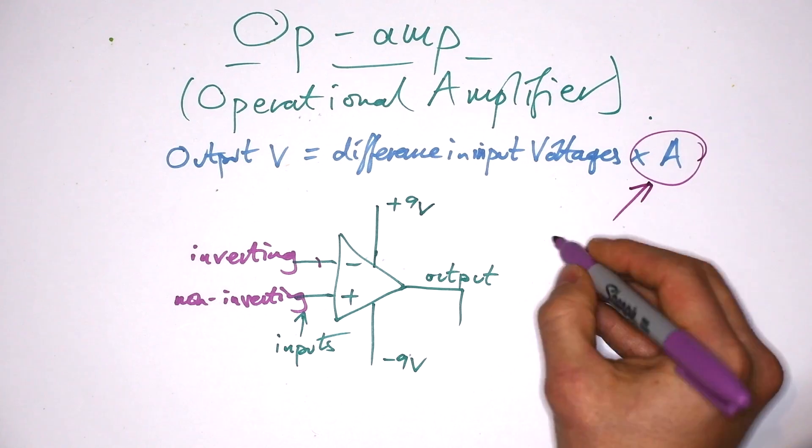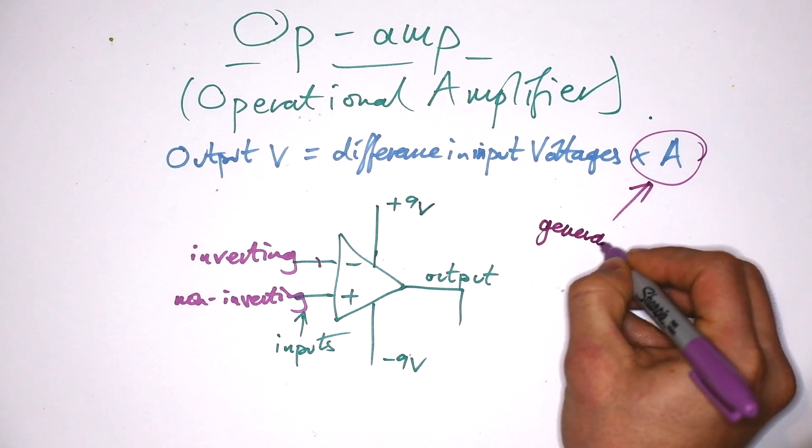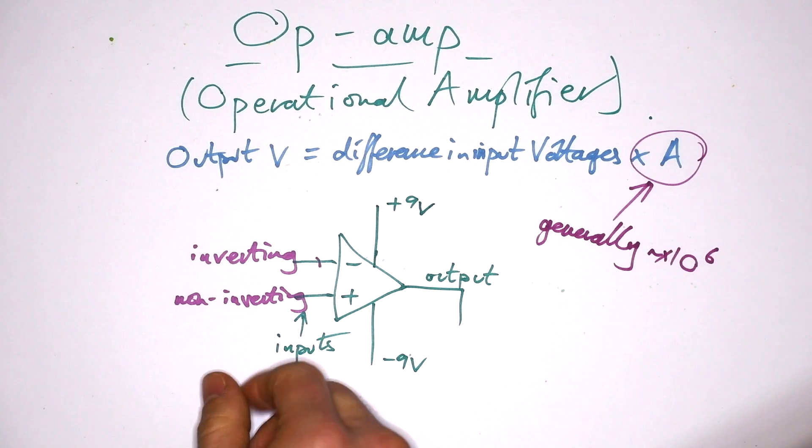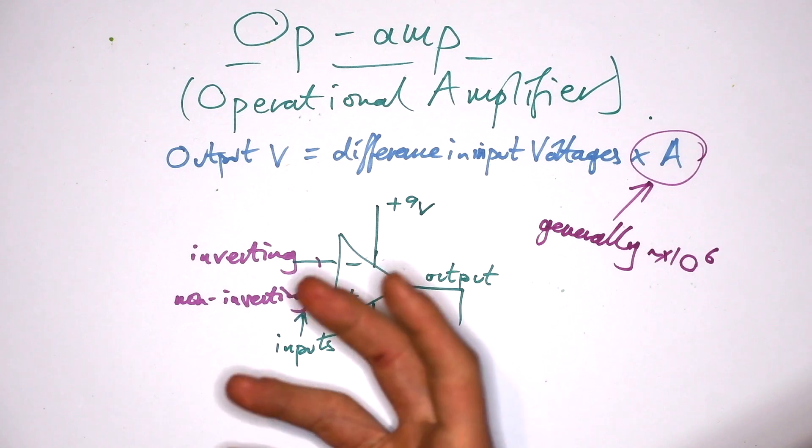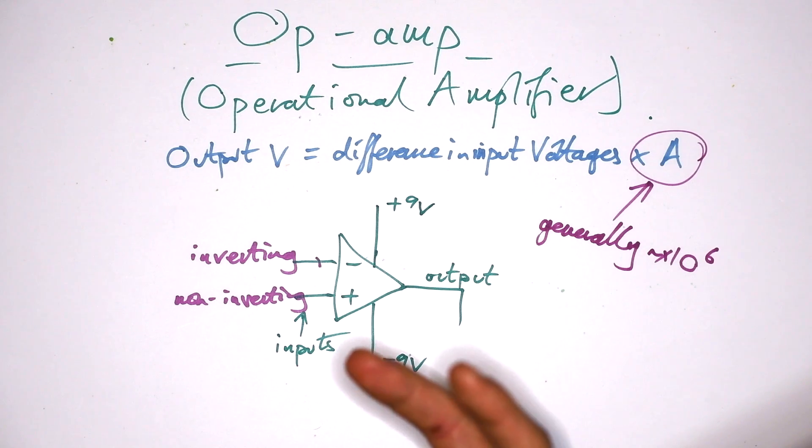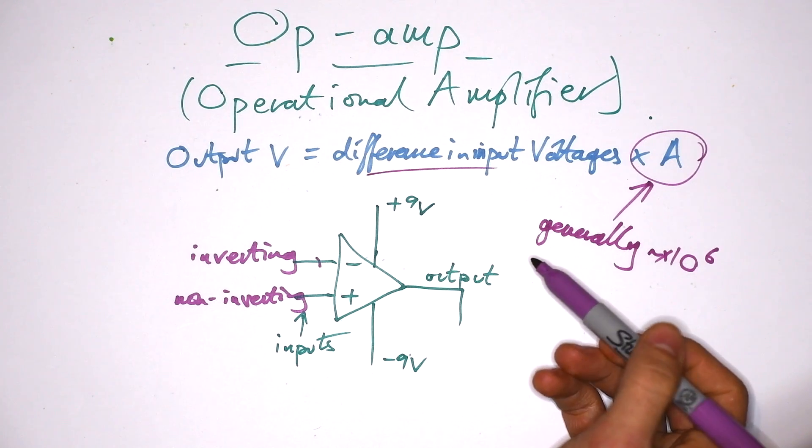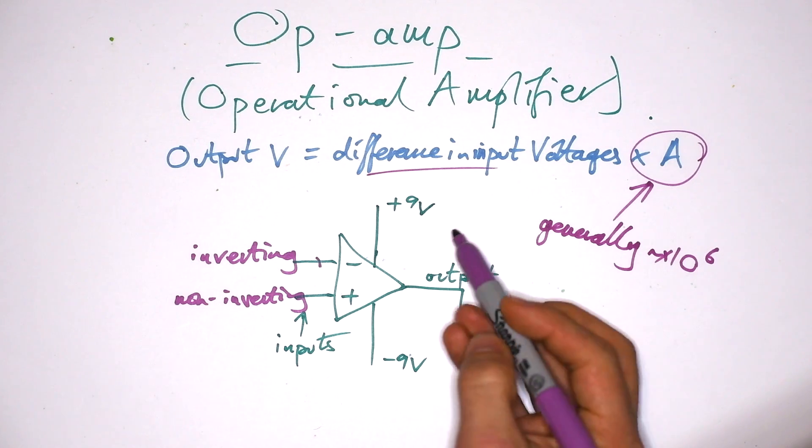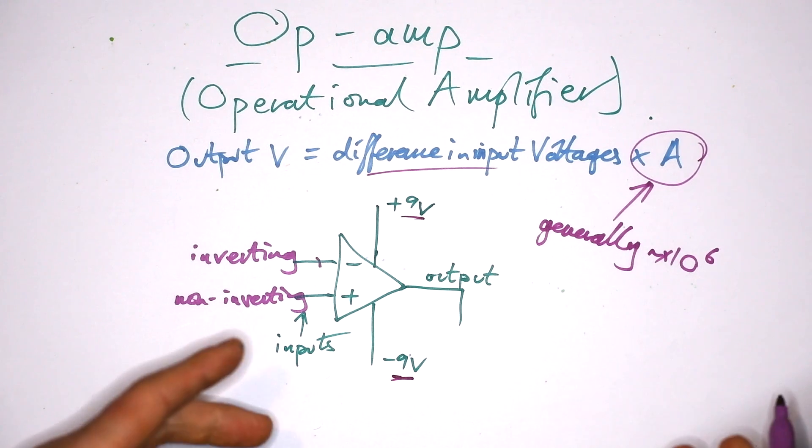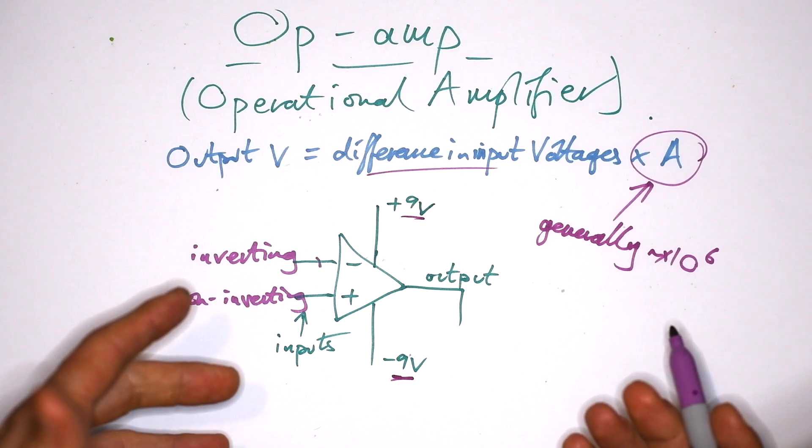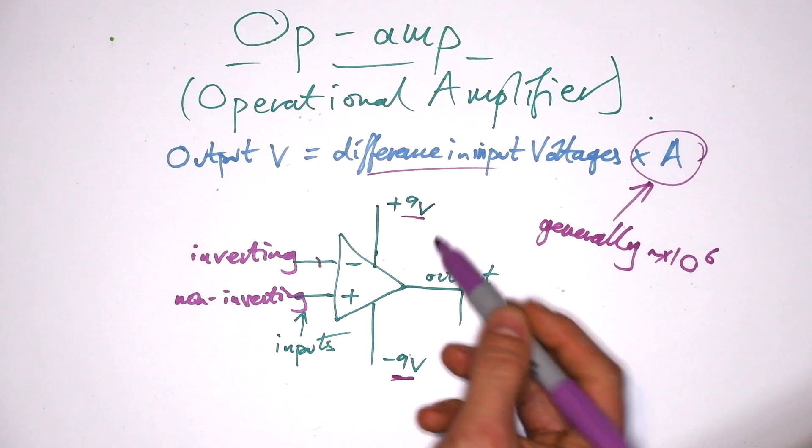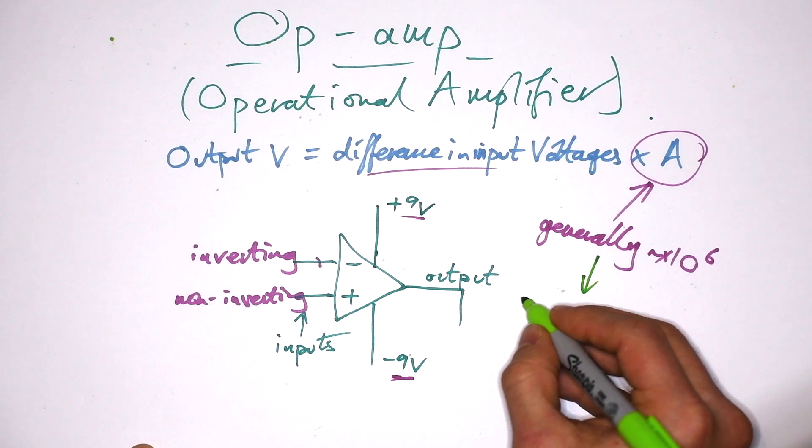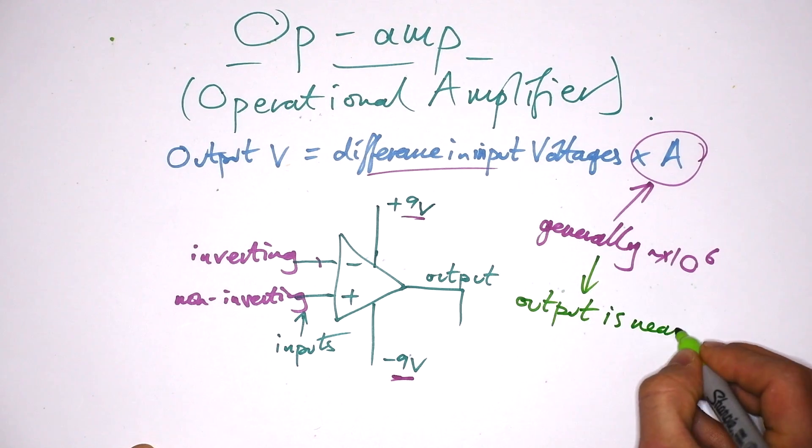However, here's the thing, this amplification is generally something like times 10 to the 6. So whatever difference you have between the voltages, an op amp will usually amplify it by a factor of millions. So let's say we take our 3 volts there, and then times 10 to the 6, well, we'd have an output of 3 million volts. But we know that we've only got this maximum plus 9 volts or minus 9 volts available. So that means that, obviously, I'm just going to get this value out here.